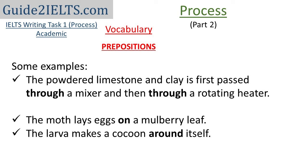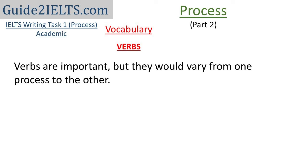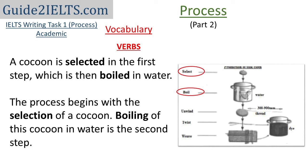In the vocabulary for process, verbs are important, but they would vary from one process to the other. In the process of production of silk cloth, the verbs are mentioned, but while writing, try to use other forms of these verbs. Example: 'A cocoon is selected in the first step, which is then boiled in water.' Or 'The process begins with the selection of a cocoon. Boiling of this cocoon in water is the second step.'